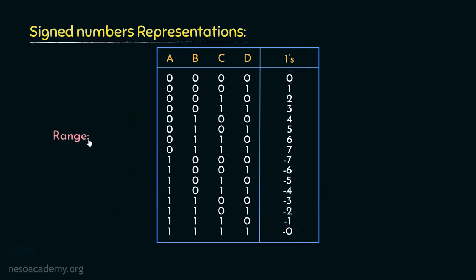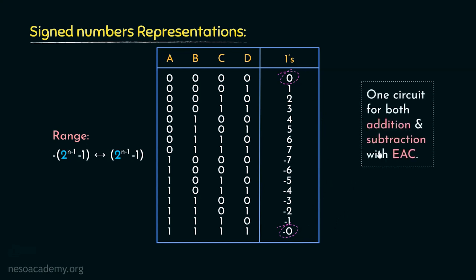With n bits, the range of values representable by one's complement is the same as signed magnitude form — minus 2 raised to the power n−1, minus 1, to 2 raised to the power n−1, minus 1. With 4 bits, the least value is minus (2 cubed minus 1), or negative 7, to positive 7. There are two zeros in the range. With one's complement we can use a single circuit for both addition and subtraction, but the circuit must facilitate the end-around carry logic.